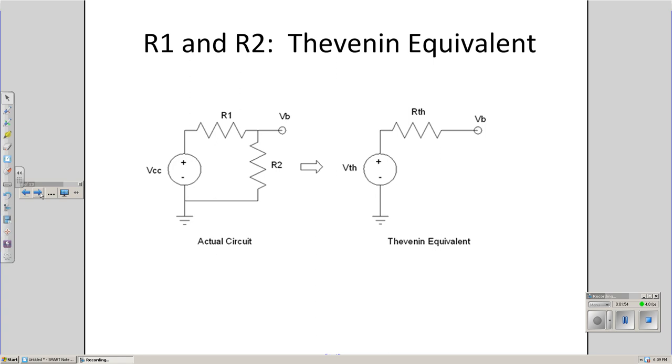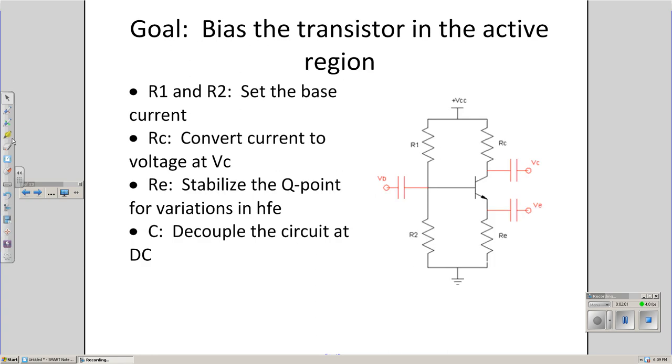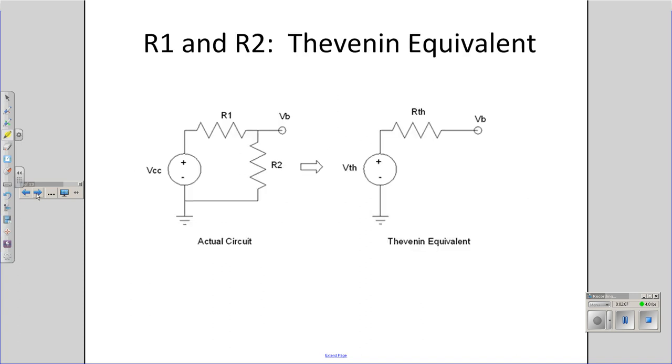And again, the trick we're going to be using quite often is the Thevenin equivalent. Take your R1 and R2 from this circuit, these guys, along with your power supply. Take the Thevenin equivalent and I can have a much simpler circuit, V Thevenin and R Thevenin, driving the base of your transistor.